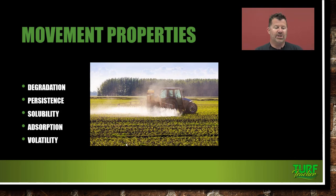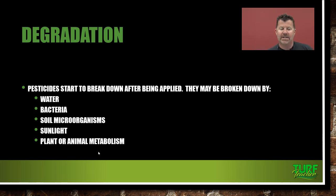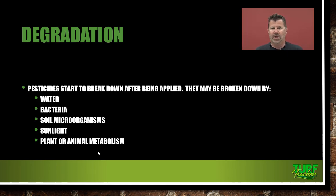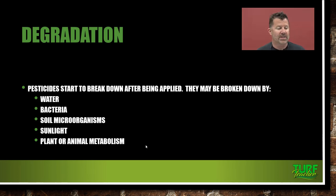Regarding movement properties, we have degradation, persistence, solubility, adsorption, and volatility. Degradation means pesticides start to break down after they're applied — that's natural. They may be broken down by water (a chemical process), bacteria, soil microorganisms, sunlight (photodegradation), or by plant or animal metabolism. The organic material from plant or animal droppings helps degrade the pesticide. This information starts on page 86 in your textbook. Degradation is just a natural process that is going to happen.